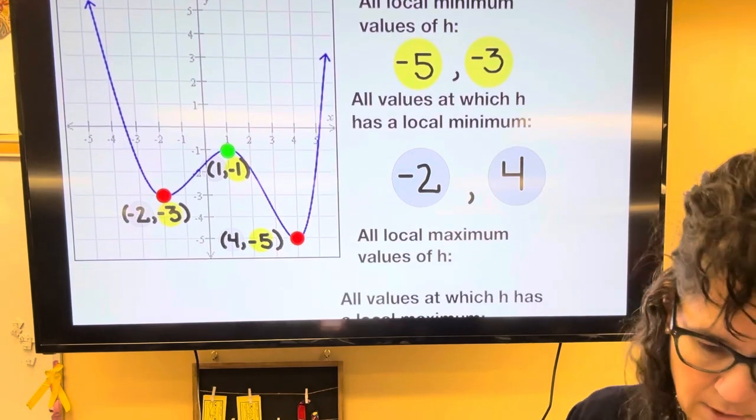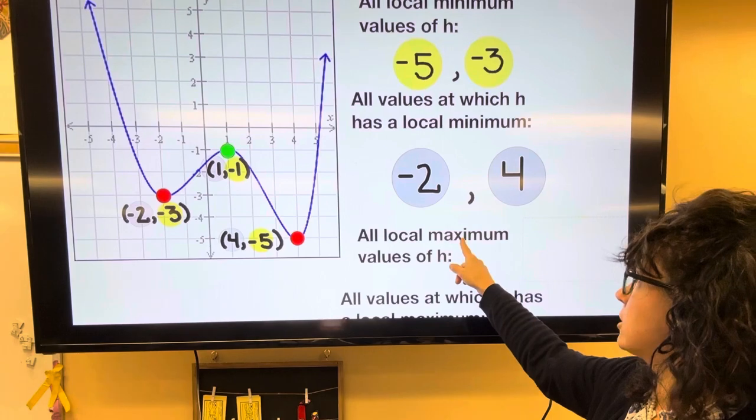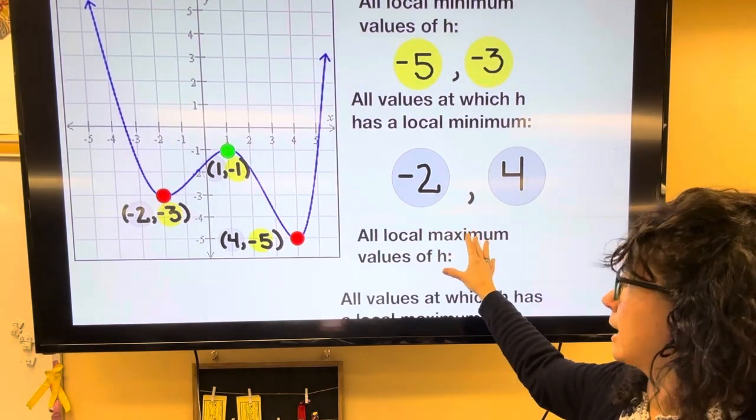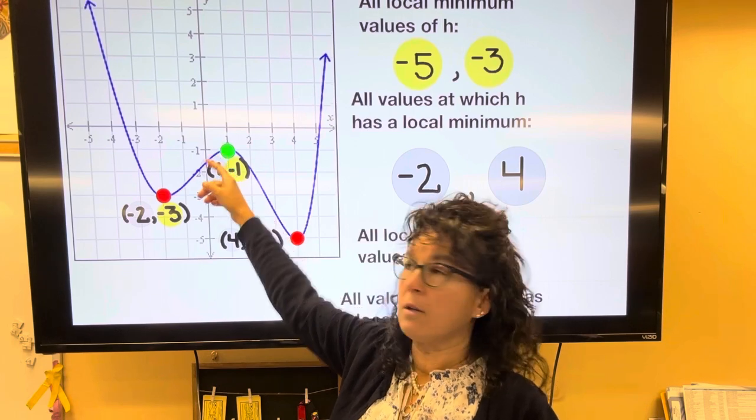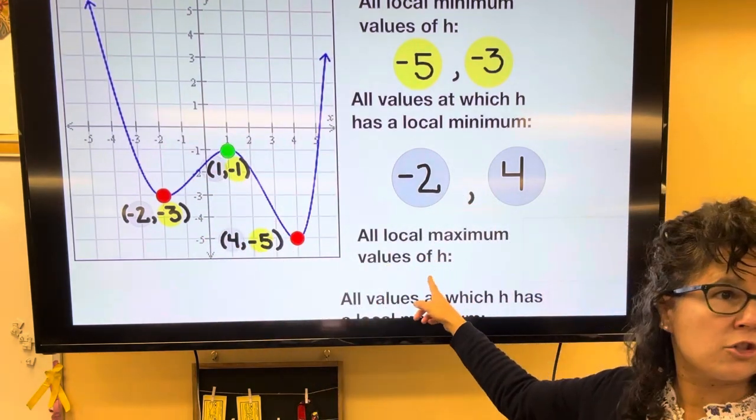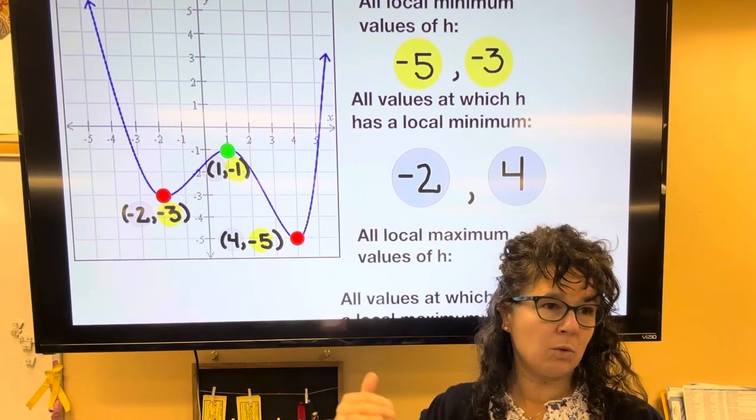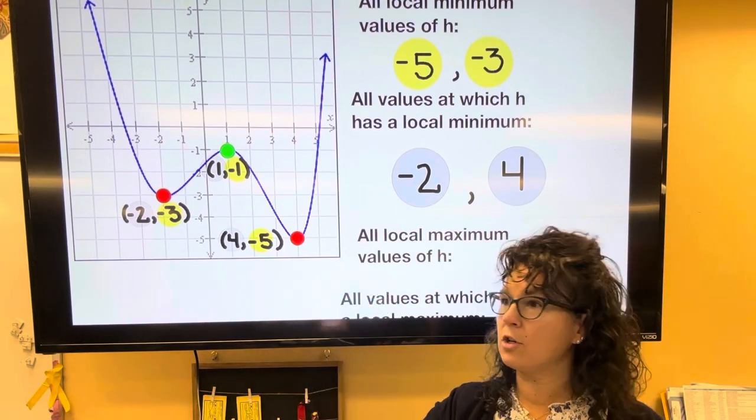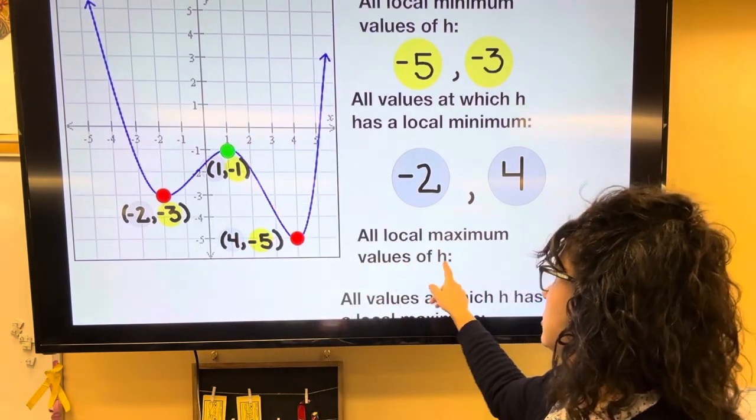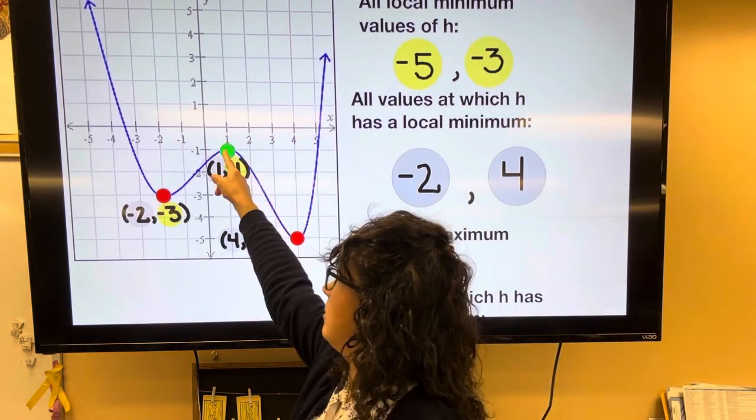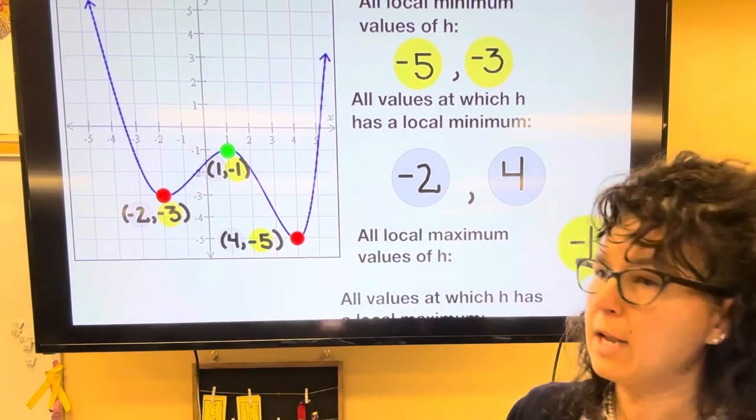Okay, then this one says all local maximum. So I'll stop there for a second. Right there's my maximum because it's top of a hill. So now values of H is referring to the Y coordinate. Like what is the height? What is the answer? If I substitute an X, what's the value of the function? So this is the Y coordinate of the maximum. So this one's going to have an answer of negative 1.